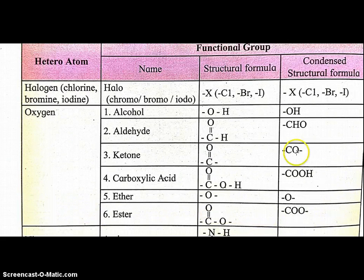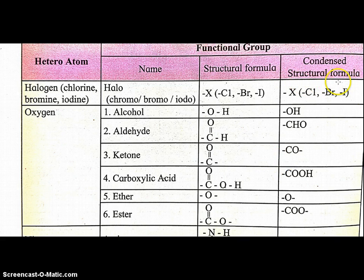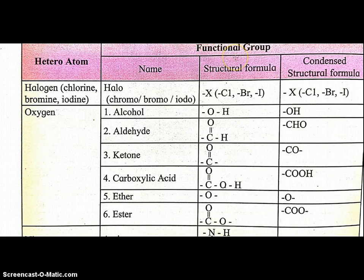Some important functional groups with heteroatoms, names, structural formula, and condensed structural formula. Functional group means the atoms or group of atoms that show specific characteristic properties. Other than carbon atoms are known as heteroatoms — like halogens, oxygen, nitrogen, sulfur, etc.